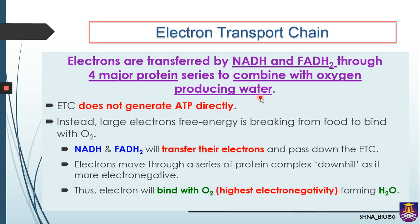I have mentioned several times that the main goal of OP is to produce a large amount of ATP. However, ETC does not generate ATP directly — it only plays a role in transferring electrons from the food molecules in order to bind with oxygen.